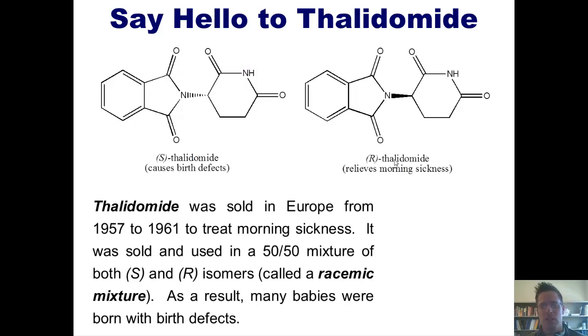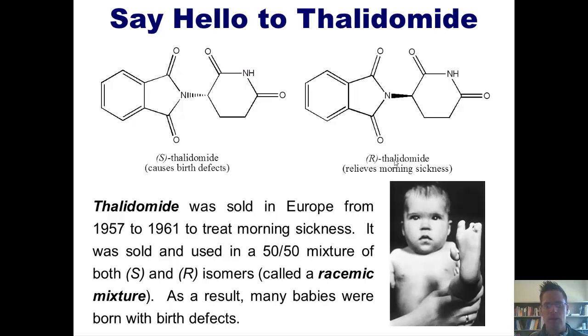As it turns out, thalidomide was sold in Europe from 1957 to 1961 to treat morning sickness in pregnant women. Sadly, it was sold and used as a 50-50 mixture of both S and R enantiomers. Now, that type of mixture is called a racemic mixture. Now, as a result, many babies were born with birth defects, and the birth defect caused by S-thalidomide is malformed limbs.